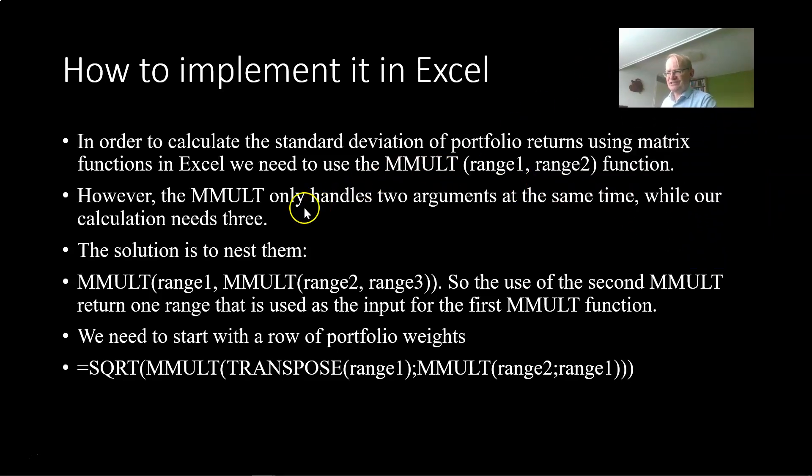At the same time this creates a small problem because MMULT only handles two arguments at the same time but we actually need three because we have portfolio weights, covariance matrix, portfolio weights. In order to implement that in Excel we need to nest them. One way to do that is to have MMULT range one times MMULT range two range three. So essentially here we have a second MMULT function that has an outcome of one range and so we get again one range and one range.